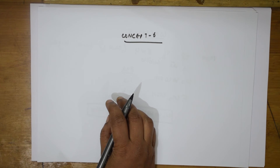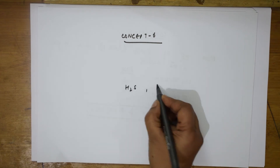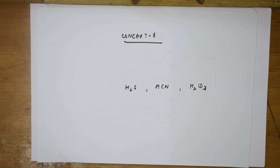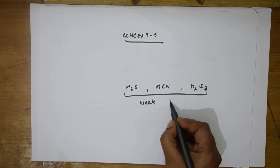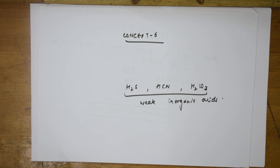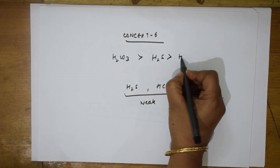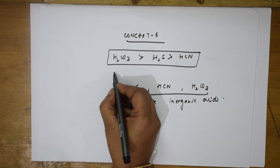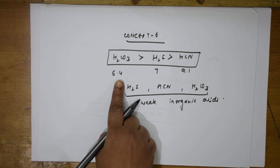In Concept 6, if they give you inorganic acids — for example H2S, HCN, and carbonic acid — these are all weak inorganic acids. If they ask you the order of acidity, remember: H2CO3 is stronger than H2S, which is stronger than HCN. The pKa values are: H2CO3 = 6.4, H2S = 7, HCN = 9.2. Smaller pKa means stronger acid.